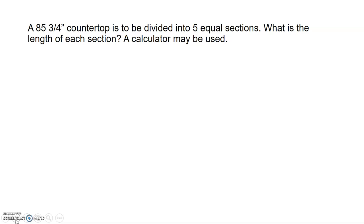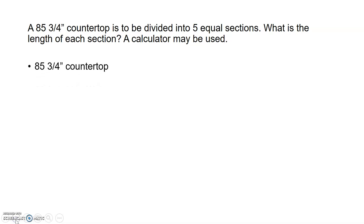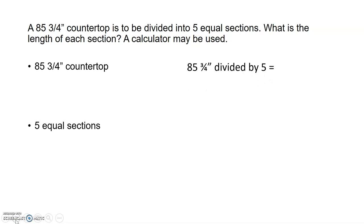Our next problem: an 85 and 3/4 inch countertop is divided into five equal sections. What is the length of each section? We take 85 and 3/4 inches and divide it by five, which gives us 17 and 1/8 inches. So each section of that countertop will be 17 and 1/8 inches.